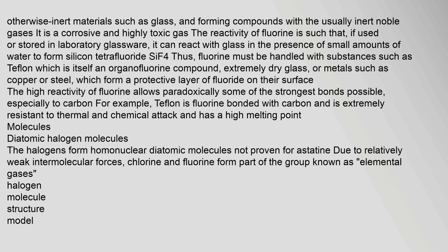Fluorine forms compounds with the usually inert noble gases. It is a corrosive and highly toxic gas. The reactivity of fluorine is such that, if used or stored in laboratory glassware, it can react with glass in the presence of small amounts of water to form silicon tetrafluoride. Fluorine must be handled with substances such as Teflon — which is itself an organofluorine compound — extremely dry glass, or metals such as copper or steel, which form a protective layer of fluoride on their surface. The high reactivity of fluorine allows, paradoxically, some of the strongest bonds possible, especially to carbon. For example, Teflon is fluorine bonded with carbon and is extremely resistant to thermal and chemical attack with a high melting point.